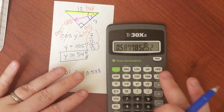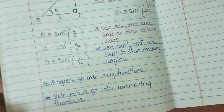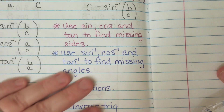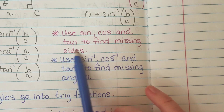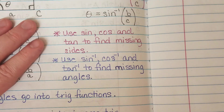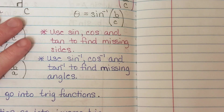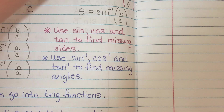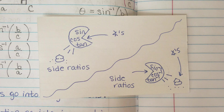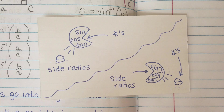In terms of right triangle trigonometry, the most important thing to know: you use sine, cosine, and tangent to find missing sides; you use inverse sine, inverse cosine, and inverse tangent to find missing angles. And if that still doesn't help you, hopefully the Pac-Man analogy will. I hope this video helped you with your inverse trig. Happy studying.